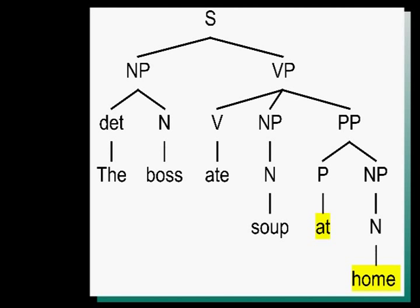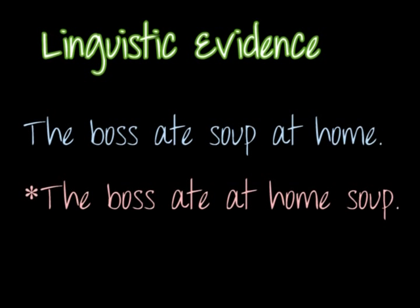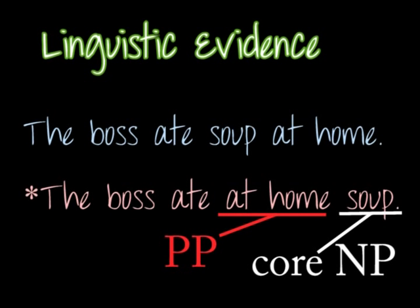When we start asserting the syntactic structure of a chunk of language like this, it makes sense to figure out if the arrangements we're choosing have linguistic support. Do we have any reason to maintain this flat structure, or do we have any rationale for adding some depth to this verb phrase? Consider two pieces of natural language data as evidence: "The boss ate soup at home" versus "The boss ate at home soup." The second sentence doesn't work because the prepositional phrase falls too close to the verb — it seems the verb expects the core argument "soup" to follow. Core arguments seem to fall adjacent to the verb.